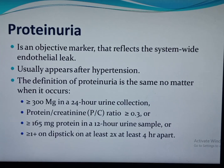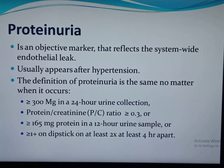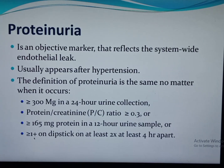Proteinuria is an objective marker reflecting system-wide vascular endothelial injury resulting in endothelial leak. It usually appears late in the course of the disease, commonly after hypertension, though sometimes it appears earlier, especially in preeclampsia. The definition of proteinuria is the same regardless of trimester. Quantitative tests include 24-hour urine protein greater than or equal to 300 mg, or a spot urinary protein-to-creatinine ratio greater than or equal to 0.3.